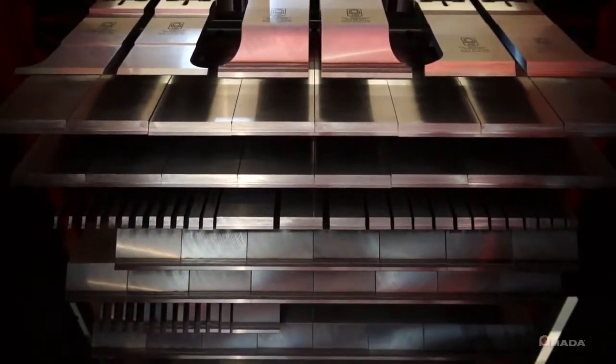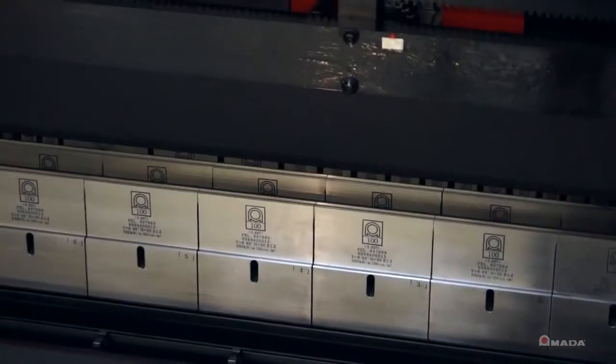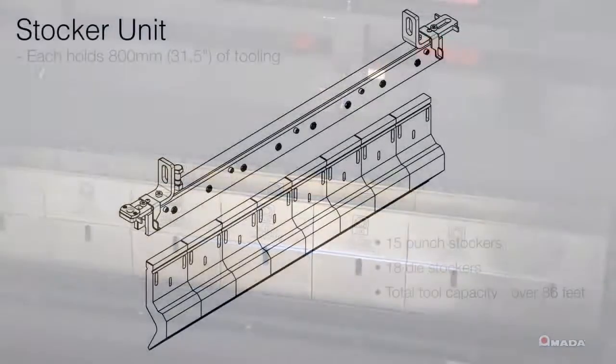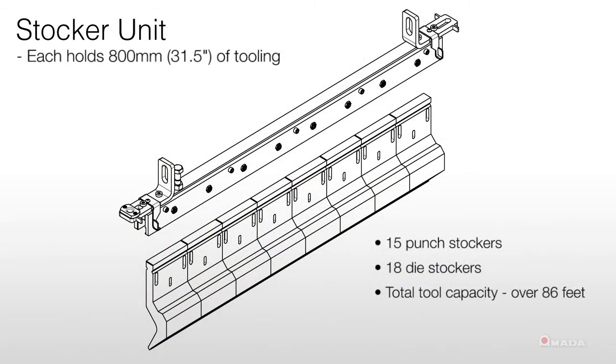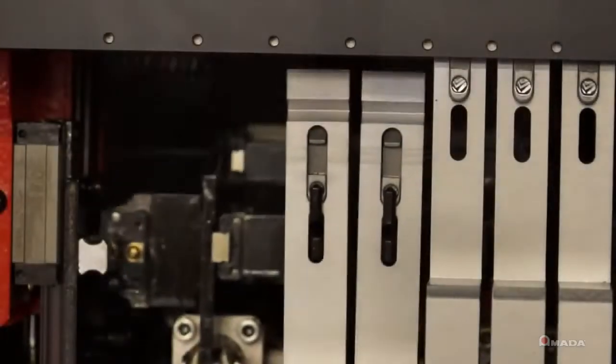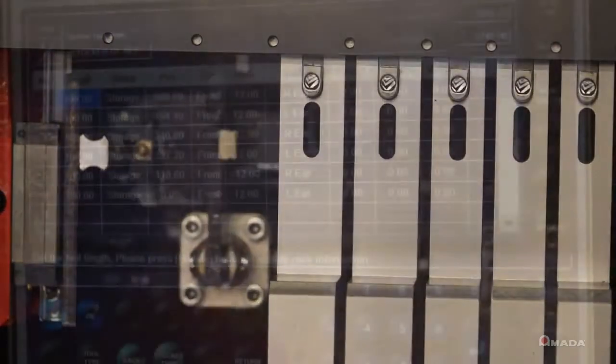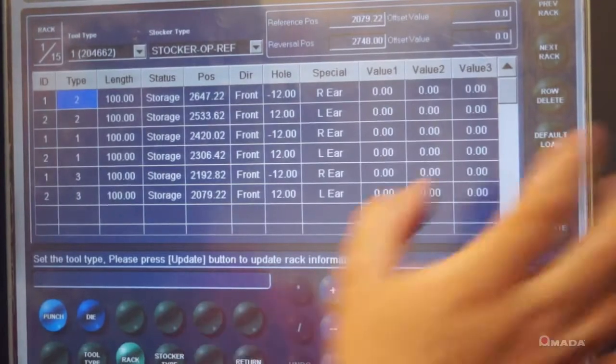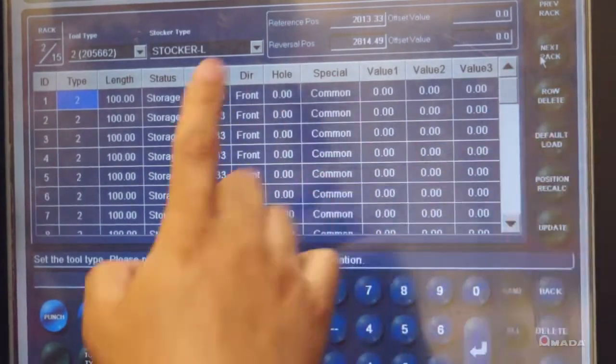The ATC has 15 punch stockers and 18 die stockers. Each stocker can hold 800 mm in tooling which brings the total tool capacity to over 86 feet. It utilizes 170 mm, 220 mm or 240 mm tall punches and the ATC's control makes it easy to manage everything in your tooling library.